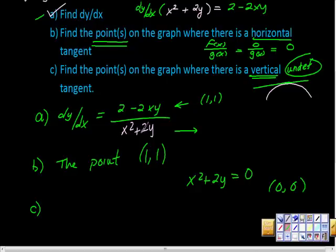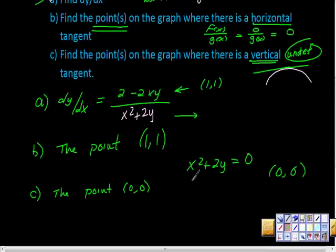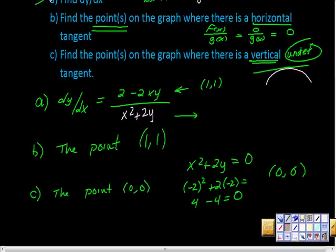Because if you put 0 here and 0 here, we'd get 0 at the bottom, undefined. So we'd have at the point (0, 0). And then, let's see if there's another one. And I think that there is. I think if this was equal to negative 2. Negative 2 squared is 4. 2 times negative 2 is negative 4. 4 minus 4 is 0. So we also get at the point (-2, -2).